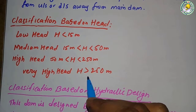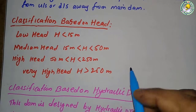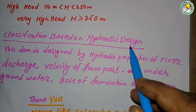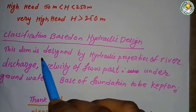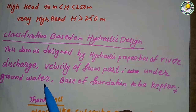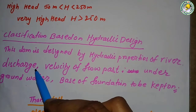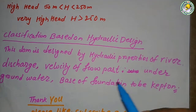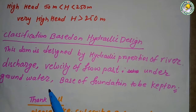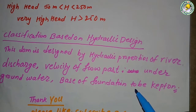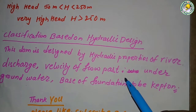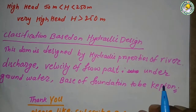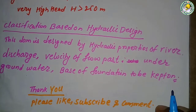A very high head dam has a height greater than 250 meters. Classification based on hydraulic design considers hydraulic properties of the river such as discharge, velocity of flow, underground water, and the base of the foundation. Thanks for watching — please like, subscribe, and comment on the channel.